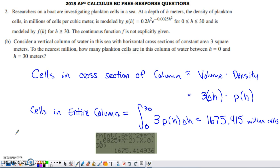Part B is kind of interesting. It talks about a vertical column of the water in the sea, horizontal cross-sections, constant area, 3 square meters. To the nearest million, how many plankton cells are in this column of water between h equals 0 and h equals 30?